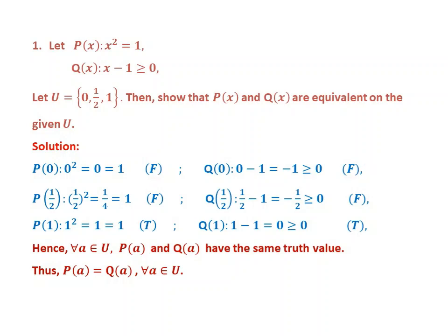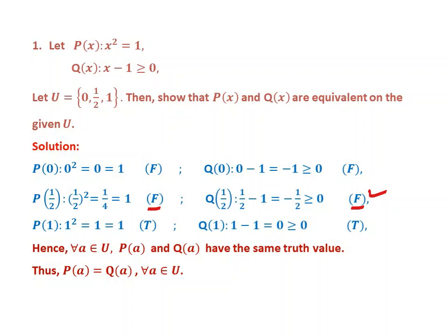Next, let us check for x = 1/2. P(1/2): (1/2)² = 1/4, and 1/4 = 1, which is false. Again, Q(1/2): 1/2 - 1 = -1/2, and -1/2 ≥ 0, which is false. In this case, P and Q have the same truth value — false, false — at x = 1/2.